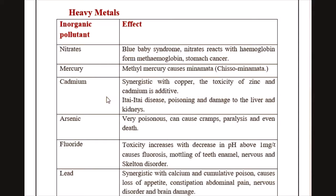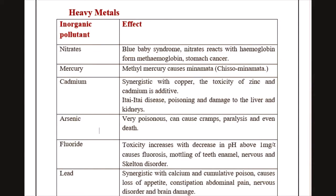An increase in the percentage of cadmium causes Itai-itai disease and also damages the liver and kidney — it is a very harmful element. The next one is arsenic: an increase in arsenic is very poisonous and can cause cramps, paralysis, and even death. The concentration of arsenic should not exceed safe limits.